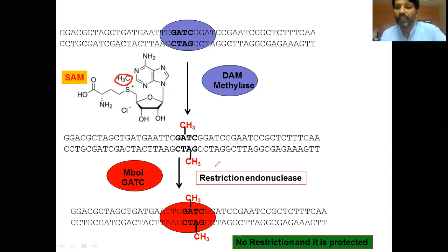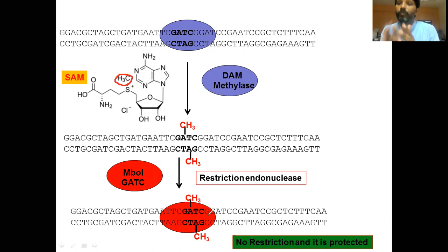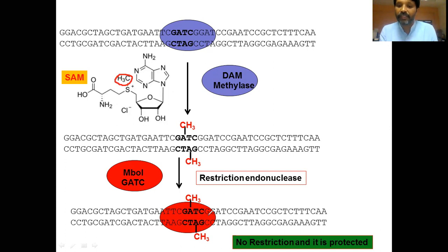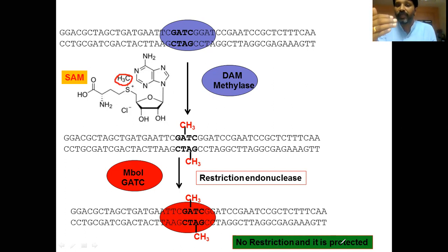If this DNA is exposed to a restriction endonuclease — for example, MboI enzyme whose site is GATC — when the site is methylated, the restriction endonuclease can recognize the site but cannot process or break it down because it is methylated. Whenever a site is methylated, it is modified and cannot be digested by the restriction endonuclease; hence the DNA is protected. So when DNA undergoes methylation, that particular site — whether completely methylated or hemimethylated — is protected from restriction endonuclease digestion.